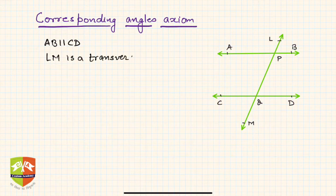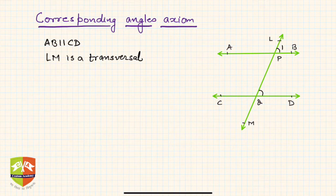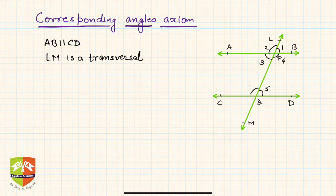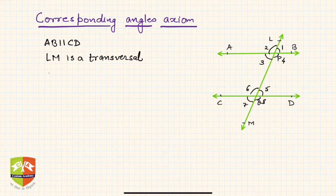Now you know what all the corresponding angles are. Let me name the angles: this is one, two, three, and four on one side, and five, six, seven, and eight on the other. So there are four pairs of corresponding angles.